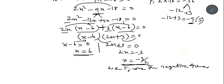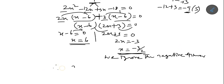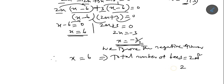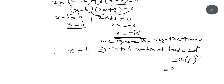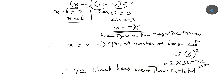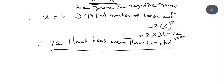So the number is positive. Therefore x equals 6, which implies the total number of bees equals 2x², so 2 into 6 squared equals 2 into 36, which equals 72. Therefore 72 black bees were there in total. That's all.